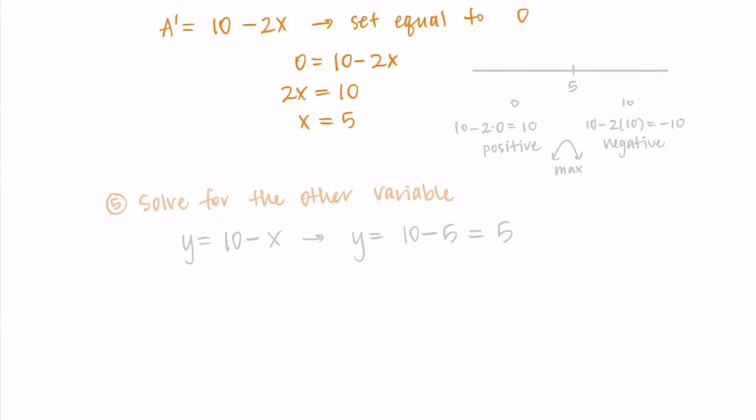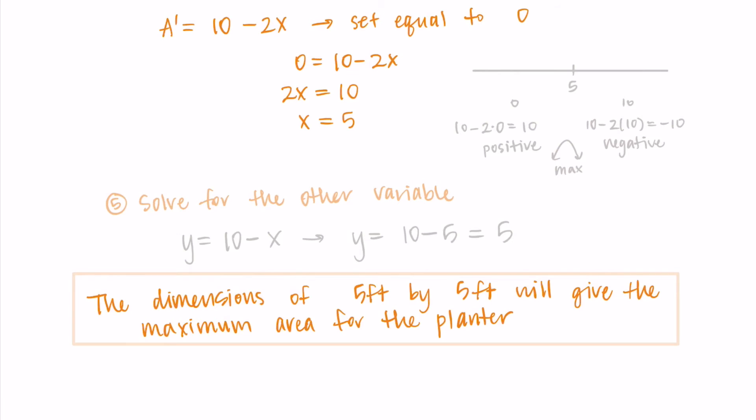This means that the dimensions of 5 feet by 5 feet will give the maximum area for the planter. And we did it! We found the maximum area that we could have with our constraint of only having 20 feet of material. Something you might notice is that this is a square planter. It turns out that anytime you're trying to maximize the area of a rectangle, you should actually just make it a square.